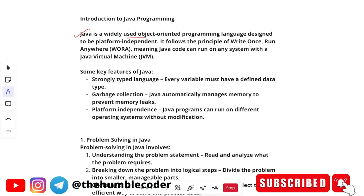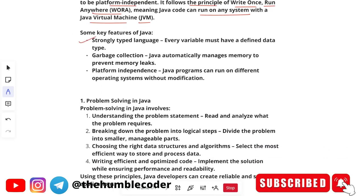Let's start with an introduction to Java programming. Java is a widely used object-oriented programming language designed to be platform independent. It follows the principle of Write Once Run Anywhere, also called WORA, meaning Java can run on any system with the Java Virtual Machine (JVM). Key features include: strongly typed language where every variable must have a defined data type, garbage collection where Java automatically manages memory to prevent memory leaks, and platform independence.